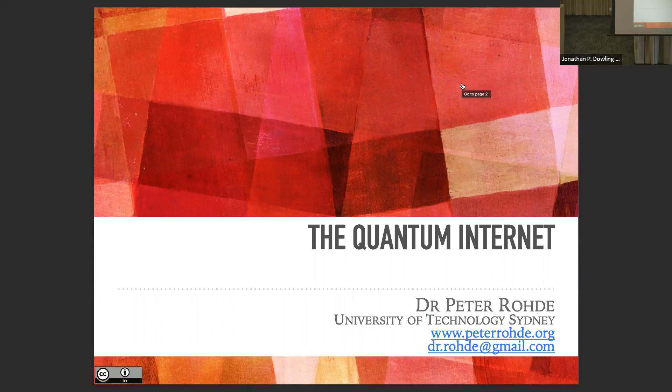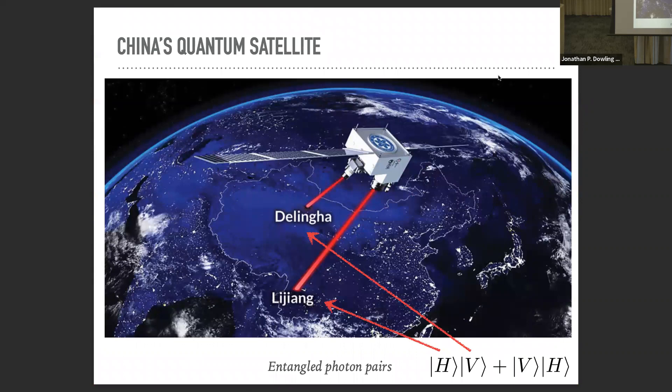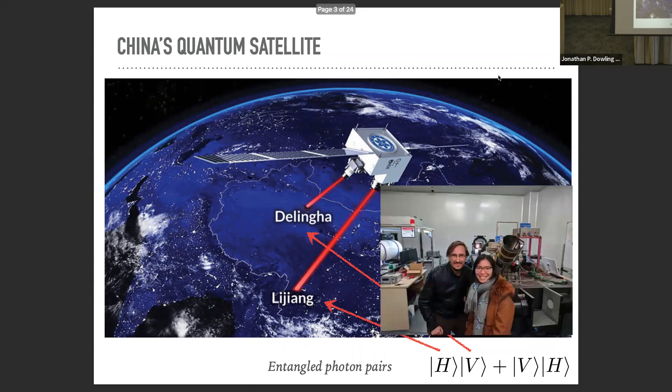You've all seen this picture from their group — a very famous experiment where they put up a low earth orbit satellite and distributed some entangled photons over a thousand kilometers between base stations on the ground. Zixin and I were lucky enough to be in China while they were prototyping this experiment. This is us standing in front of the one that didn't go to space — the ground-based prototype.